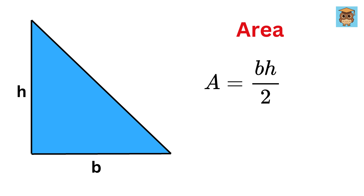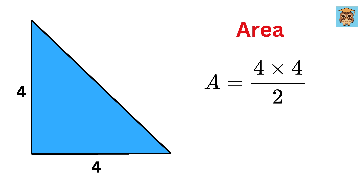Imagine you have a right triangle where the base is 4 units long and the height is also 4 units. To calculate its area, plug the values into this formula to get the answer as 4 times 4 divided by 2, or 8 square units.